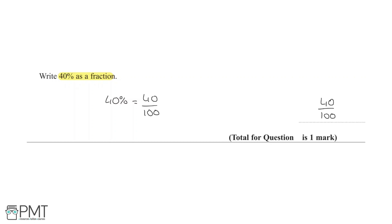This question is worth one mark and you get one mark for writing the answer 40 over 100. But you will also get the mark for writing an equivalent fraction. So if you simplified it to 2 over 5, you will get the mark as well.